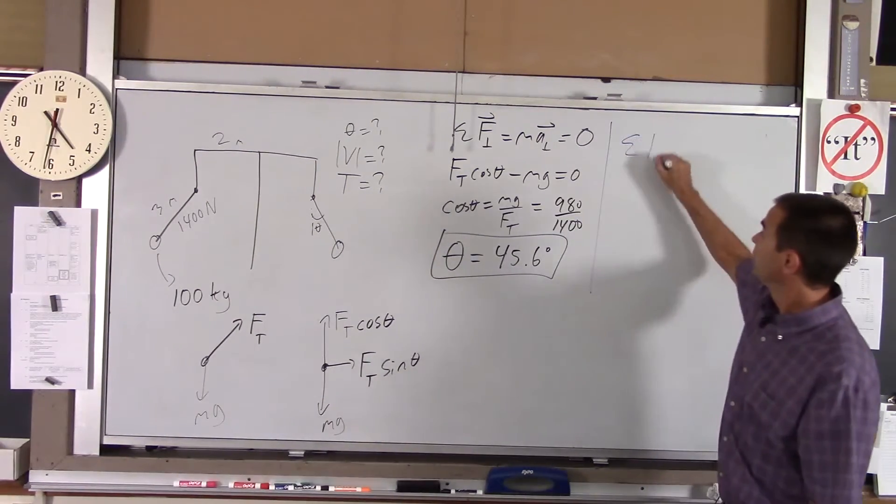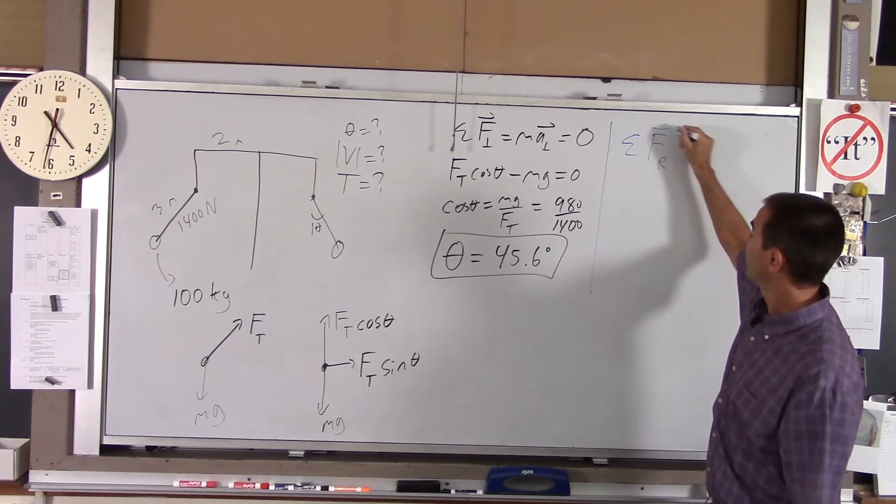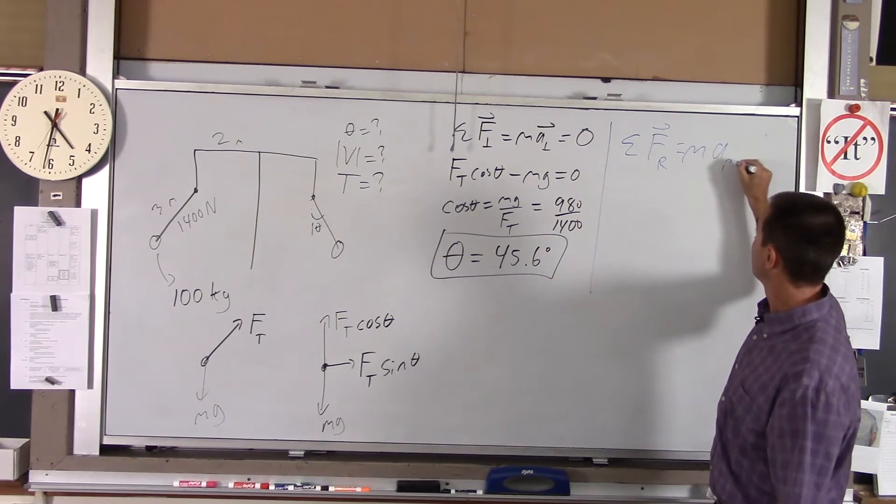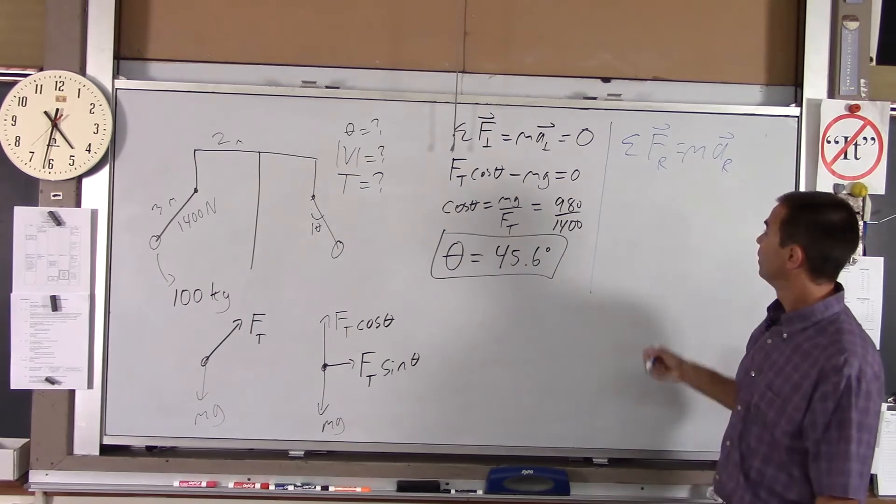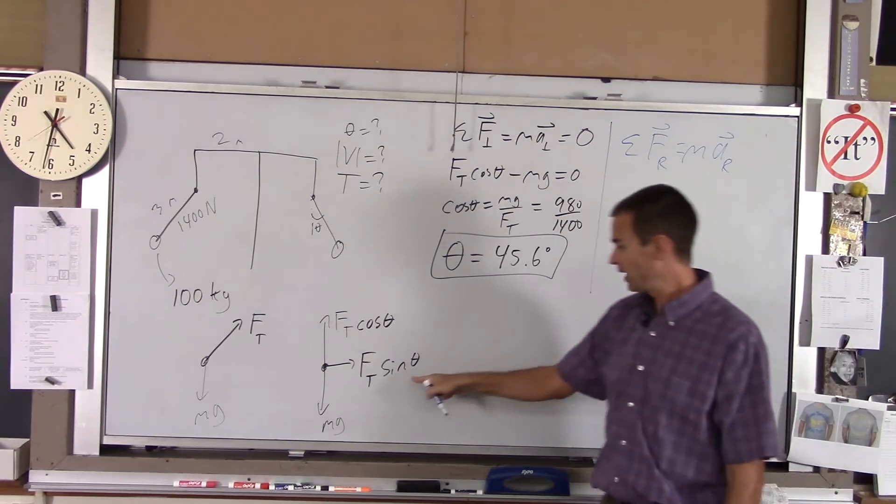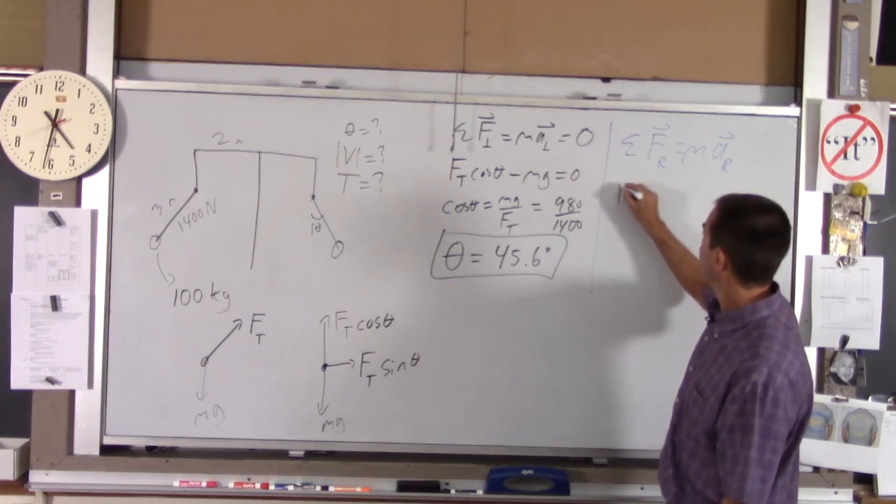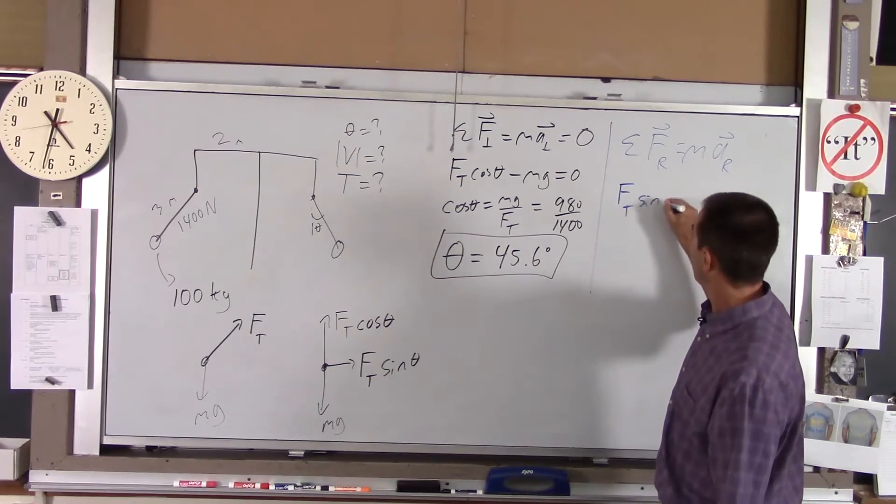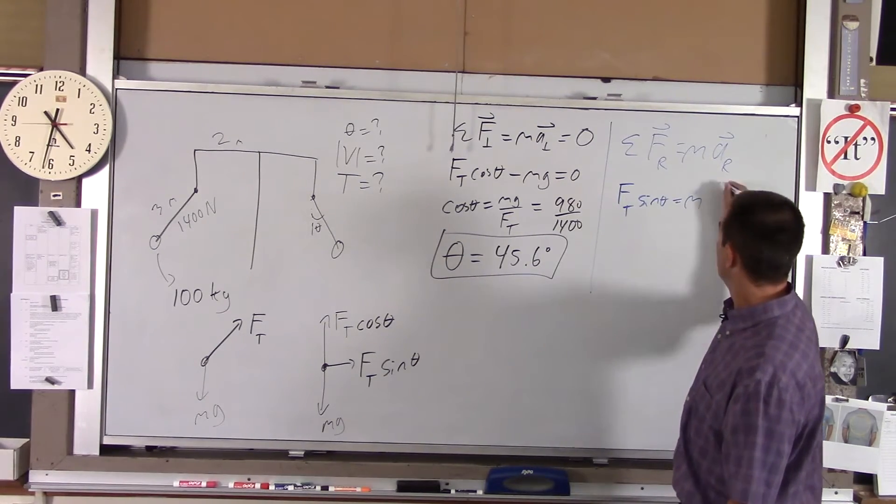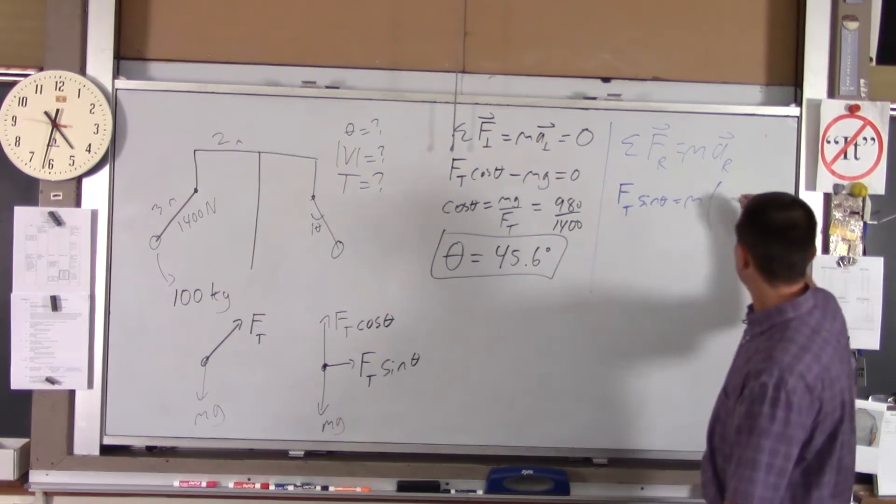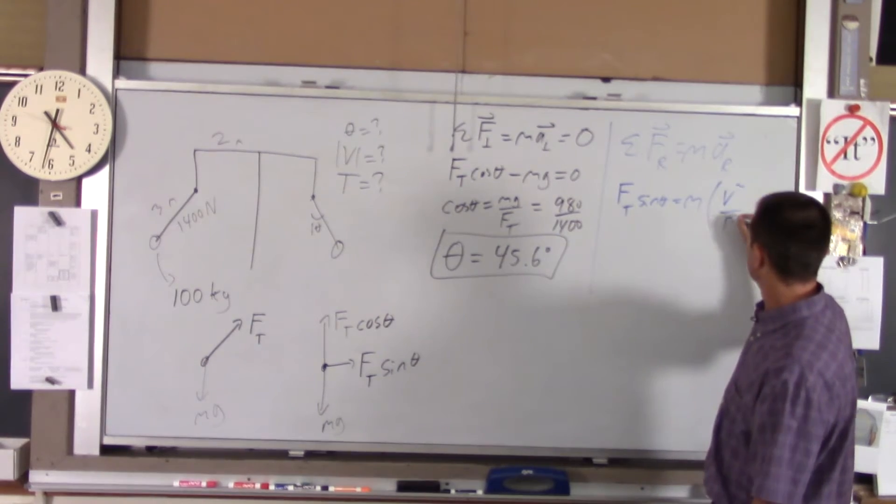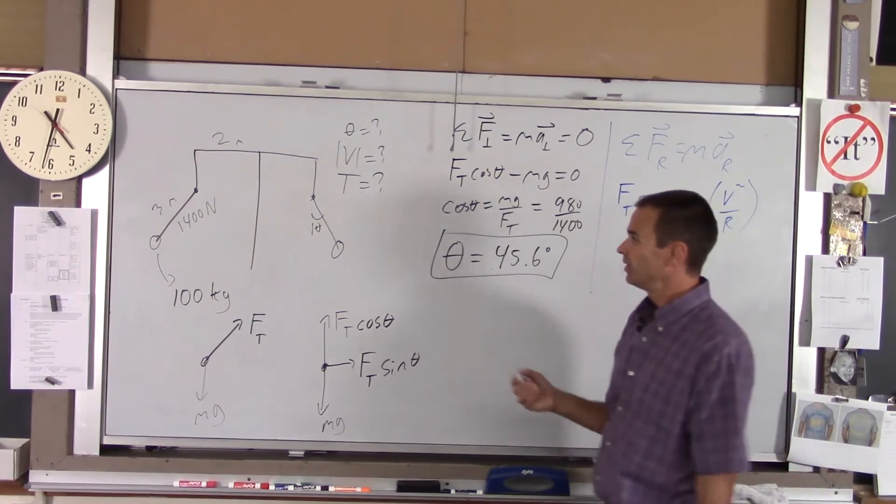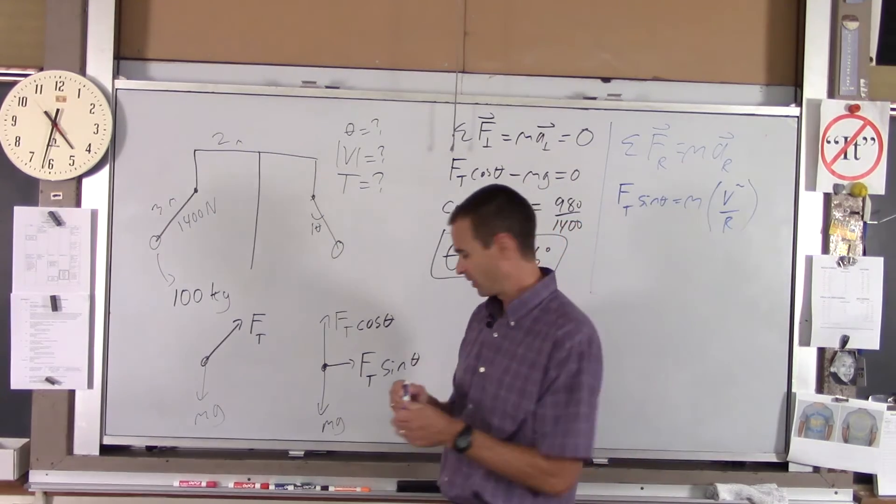If we do net force in the radial direction equals Ma in the radial direction, well, there's only one radial force. That's Ft sine theta. So we've got Ft sine theta equals M, and then A is V squared over R. Now, there's one last thing you've got to do. What's the radius of the circle?